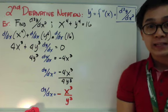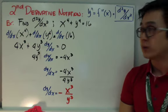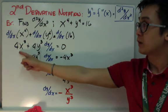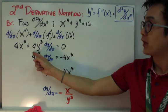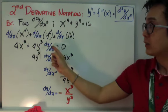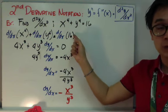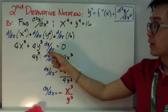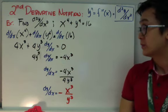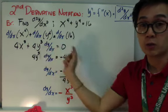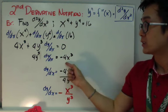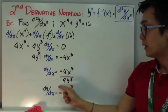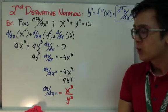Ngayon naman, pagkuha ng second derivative. Kunin natin yung derivative nung bawat isa. Derivative ng x⁴ is simply 4x³. At derivative naman ng y⁴ is 4y³ dy/dx — huwag nyo kalimutan yung dy/dx kasi kinukuha natin yung derivative nung y in terms of x — equal to 0. Kasi derivative ng constant is always 0. So to isolate dy/dx, first step is subtract nyo yung 4x³ on both sides. So meron tayong 4y³ dy/dx equals negative 4x³. Divide nyo both sides ng 4y³. Kaya yung dy/dx natin is equal to negative 4x³ all over 4y³.